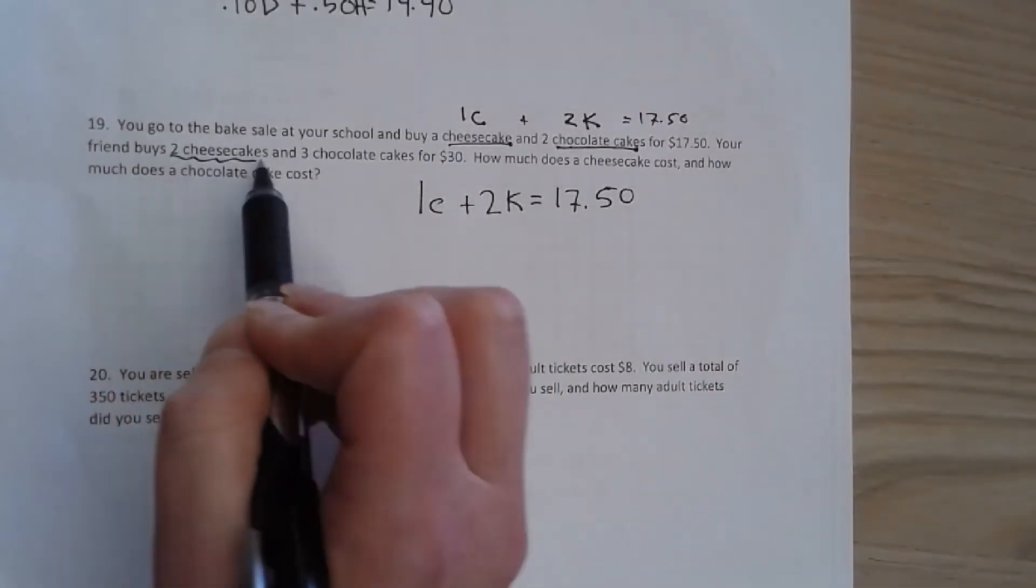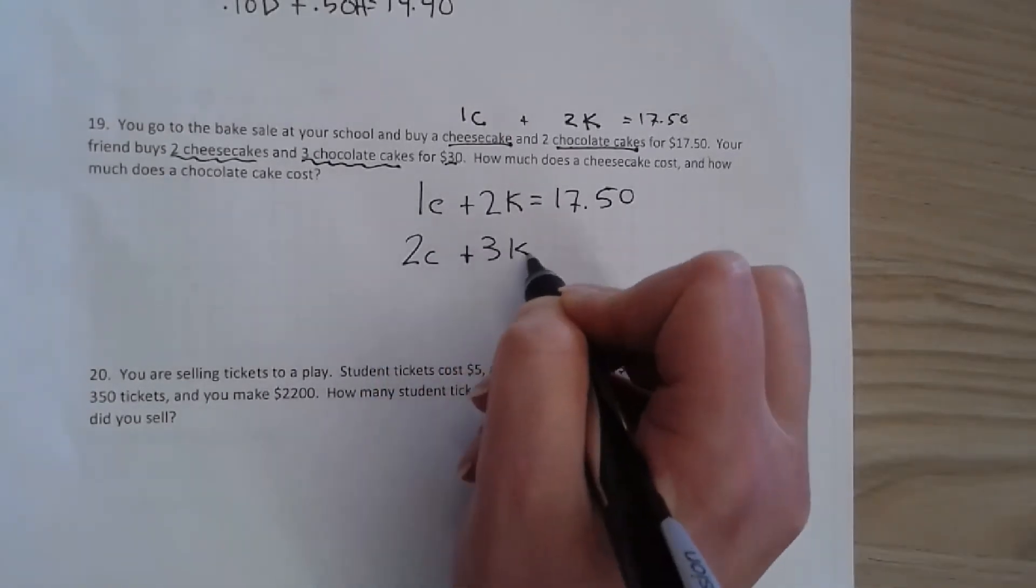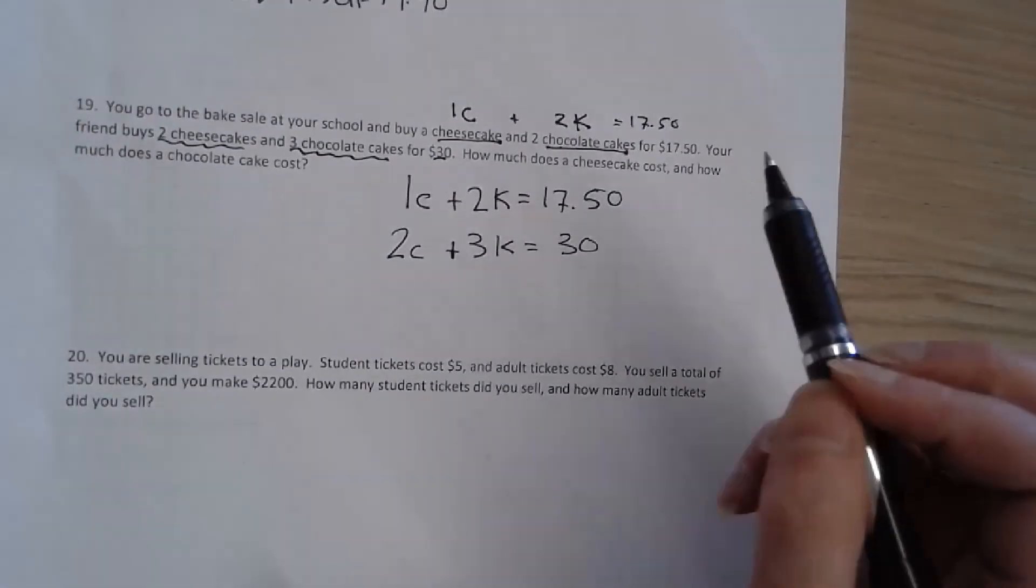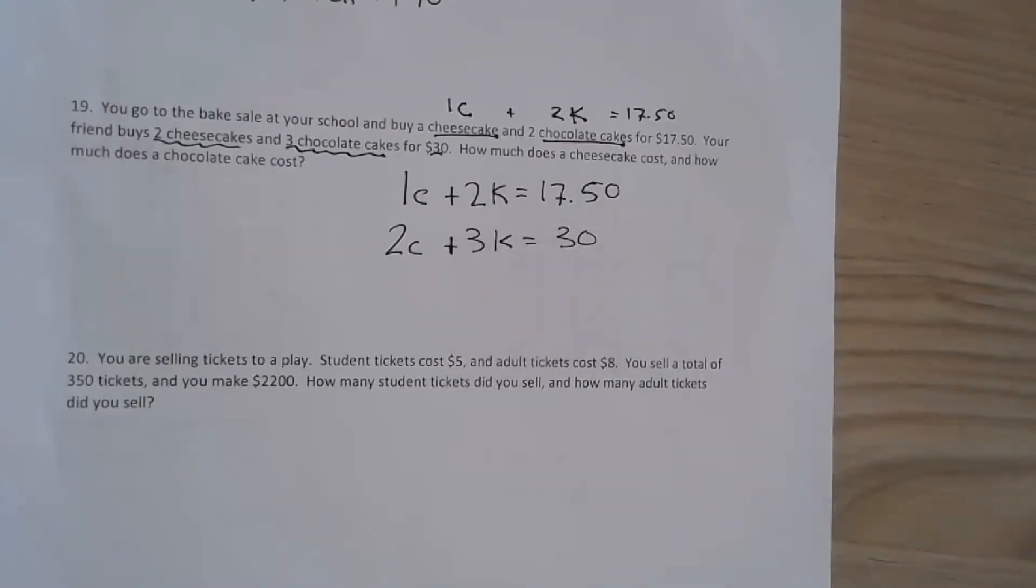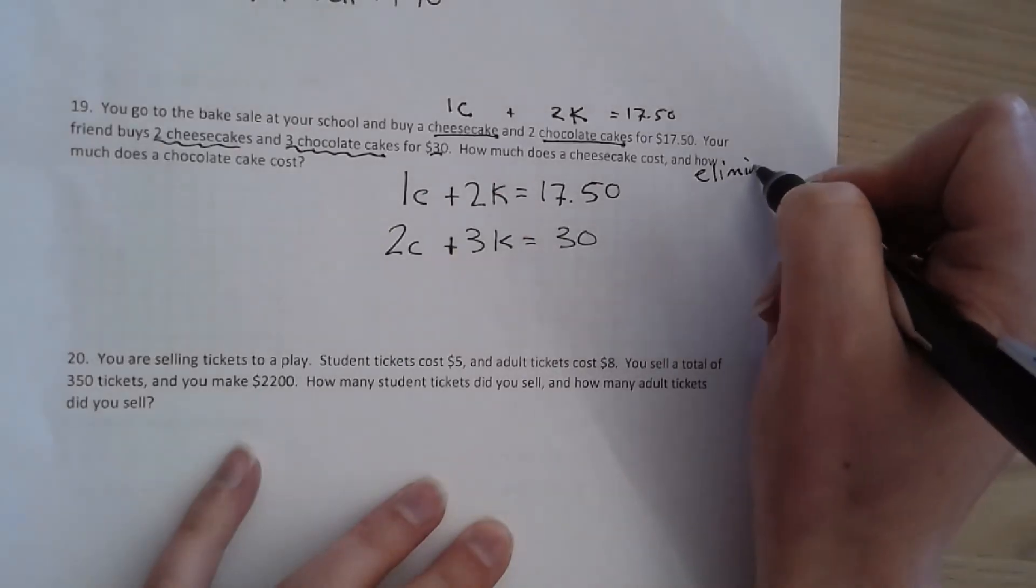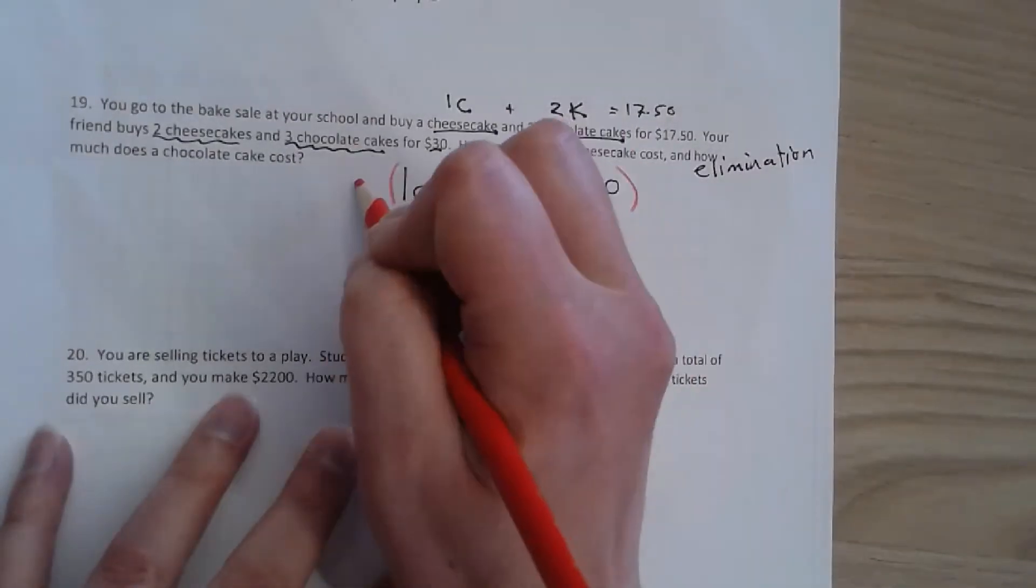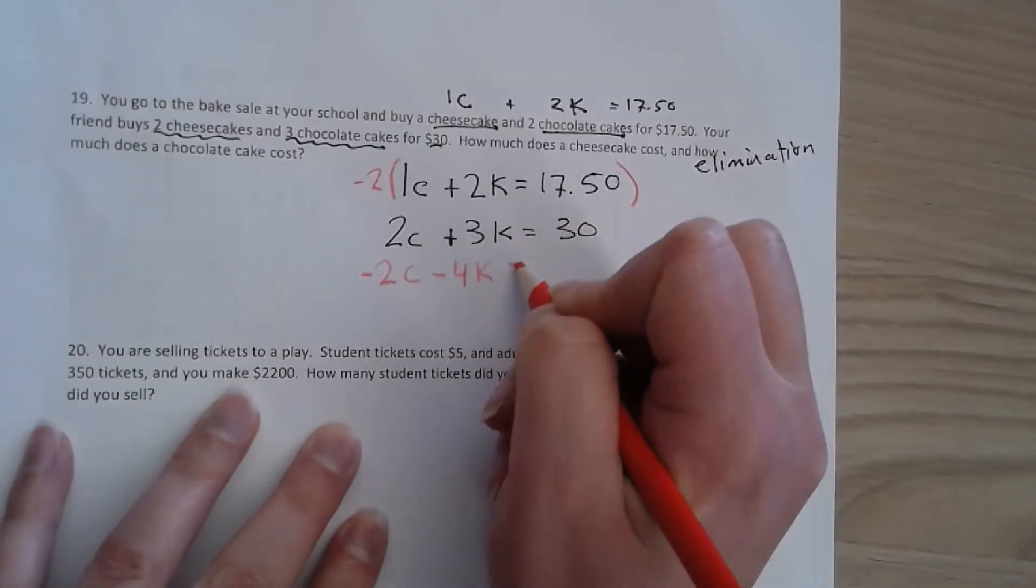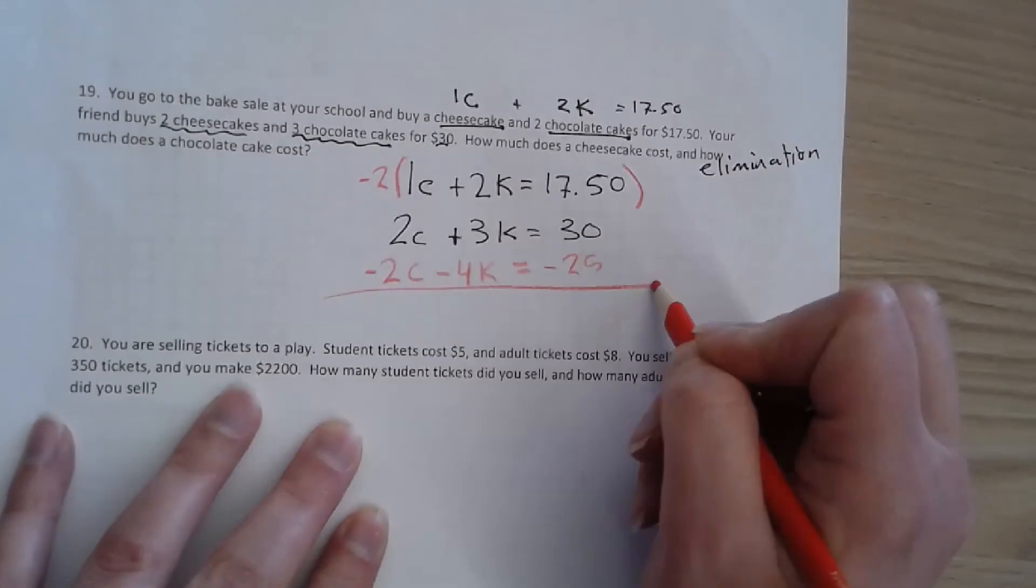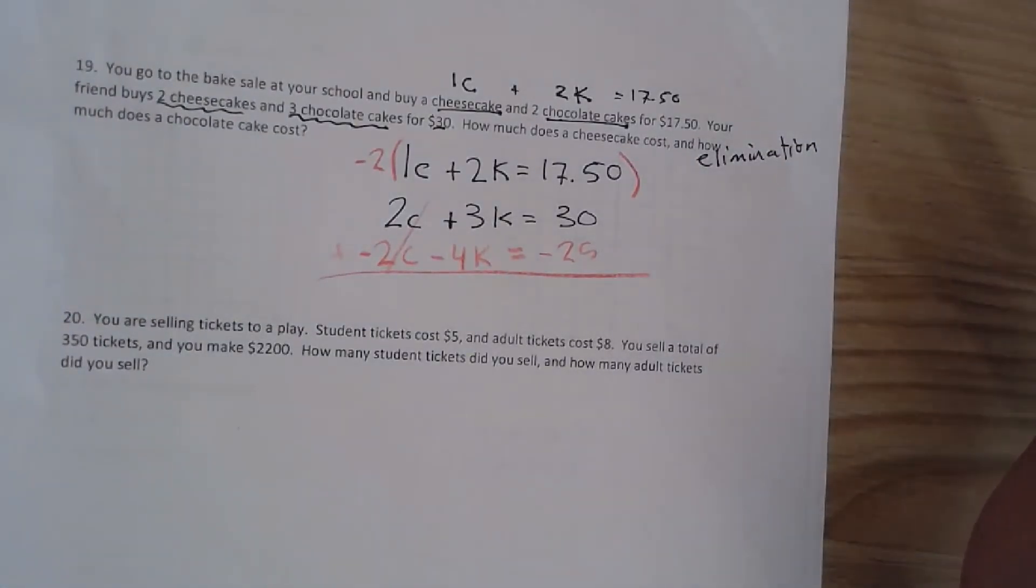Your friend on the other hand buys two cheesecakes and three chocolate cakes for 30 dollars. So once we have our two equations you could either do substitution and solve for C right here or I would suggest you use elimination. By elimination I mean we could take this top one. We could choose to get rid of C and times this by negative two. So that would be negative 2C minus 4K equals negative 25 and then we can add that and then eliminate our cheesecakes to get our chocolate cakes by itself. So again I'll let you finish that one but there's a setup.